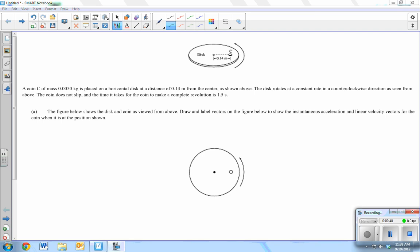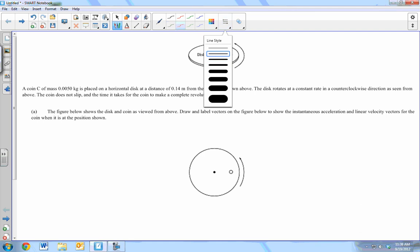So draw and label vectors to show the instantaneous acceleration and linear velocity for the coin. Which direction is the acceleration in? Always points towards the center of things moving around in a circle, so we have to have acceleration towards the center of that circle in order to make the turn. What about the velocity? It's tangent to the orbit, or rotational motion. Velocity around a circle is always tangent to the circle on the edge. Acceleration is always towards the direction center of the circle to make that turn.